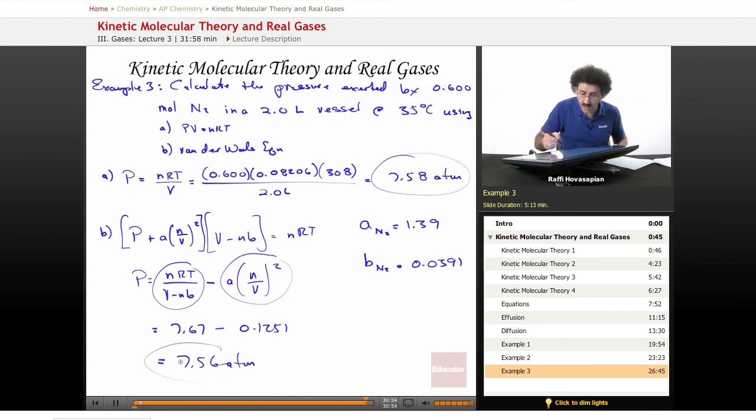So notice, under the ideal gas law, we have 7.58 atmospheres. Using the real gas behavior, we have 7.56 atmospheres. 7.56 and 7.58 are virtually the same.